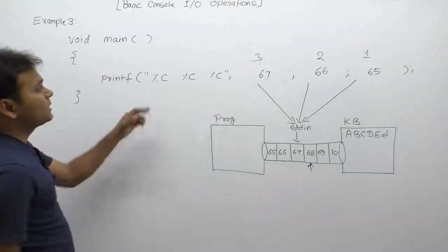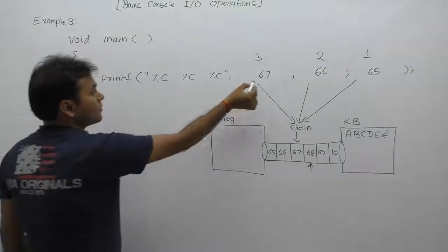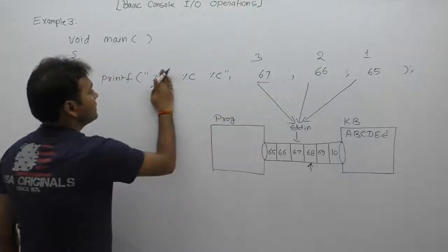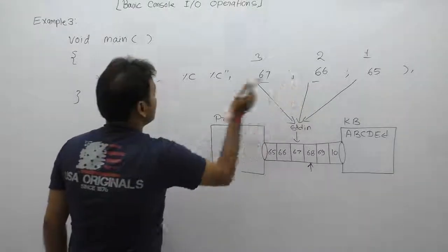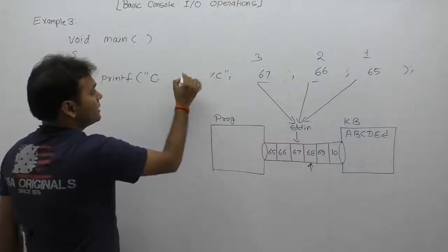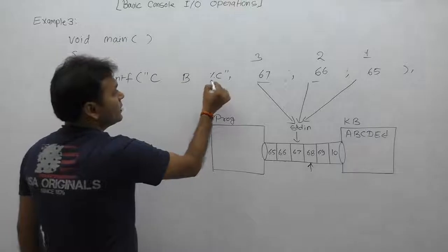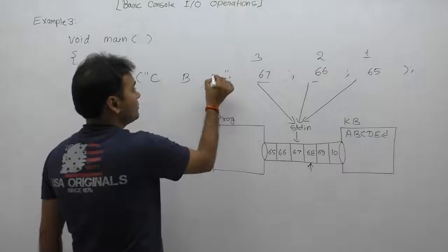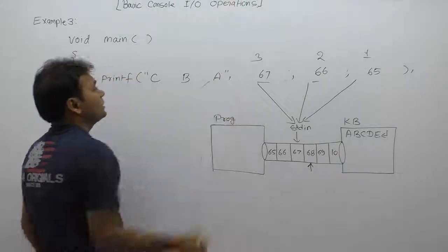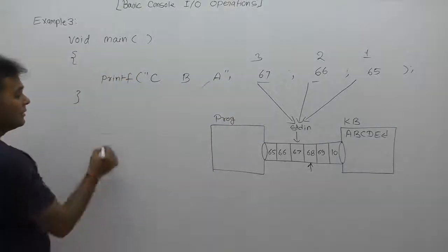Finally, first %c will be replaced by character value of 67, which is 'C'. Next %c will be replaced by current character value of 66, which is 'B'. Next %c will be replaced by character value of 65, which is 'A'. Final output displayed will be C B A.